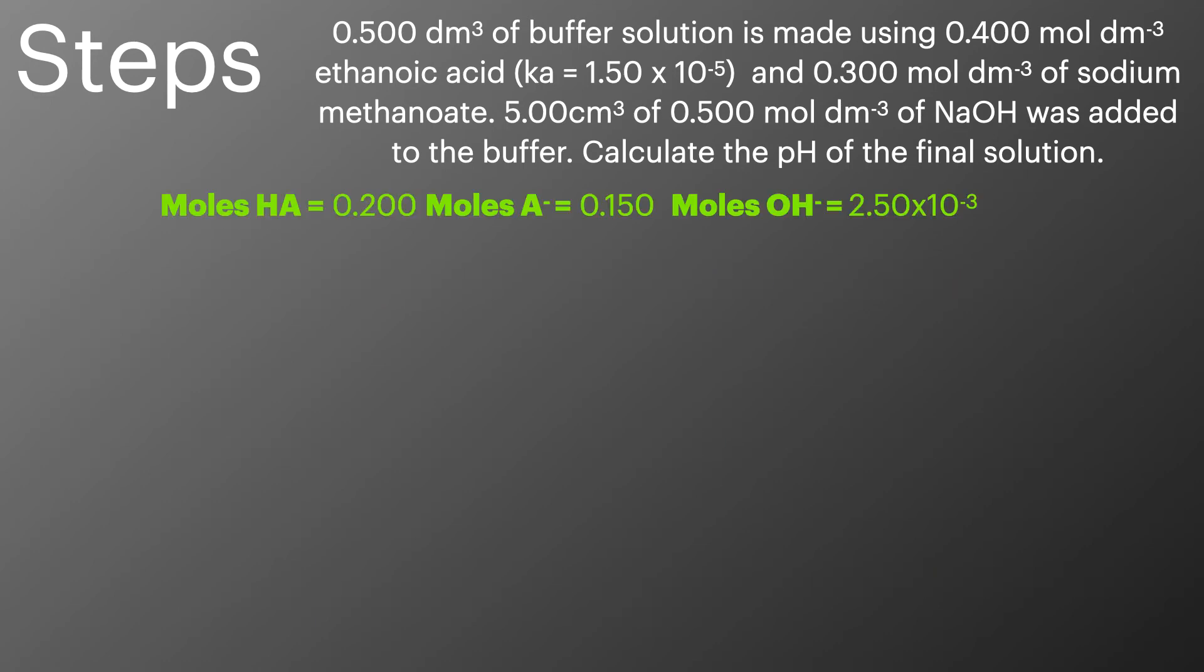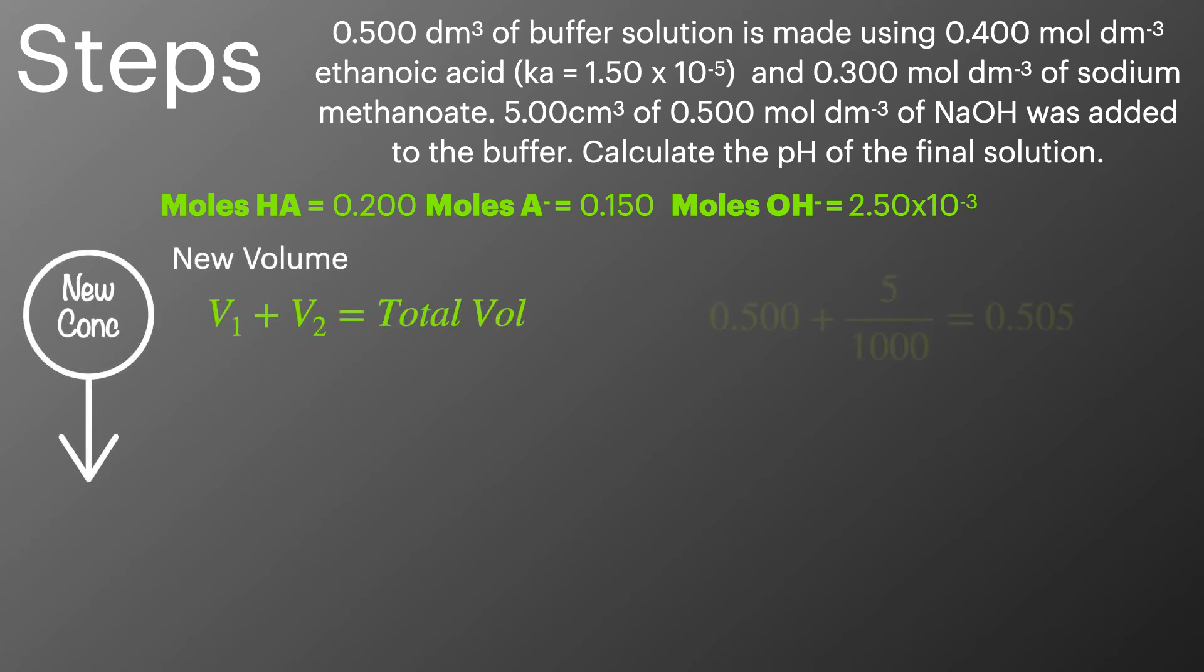In this second step we're going to work out the new number of moles of HA and A-. We're going to take into account the change in volume and work out new concentrations. The first thing we'll do is work out the new volume. We'll take the volume of the buffer and add it to the volume of the base.